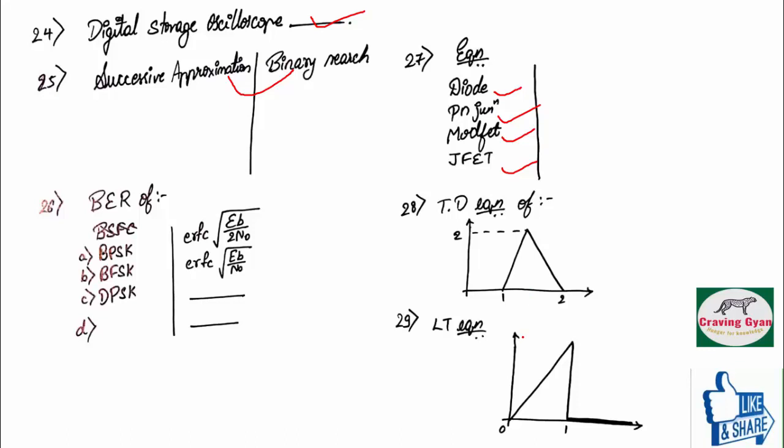And twenty-ninth question, you have to write the Laplace equation. If you are having a ramp, it is 1 divided by S square. If you are having a step, it is 1 by S. Like that, you have to solve.